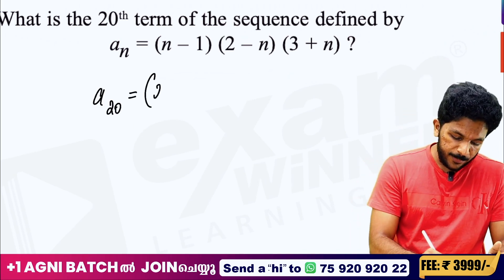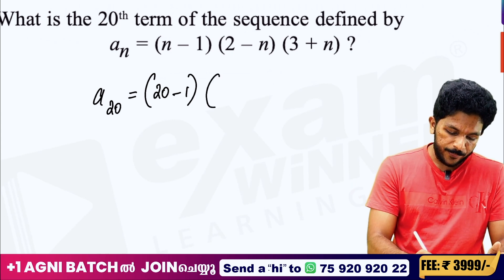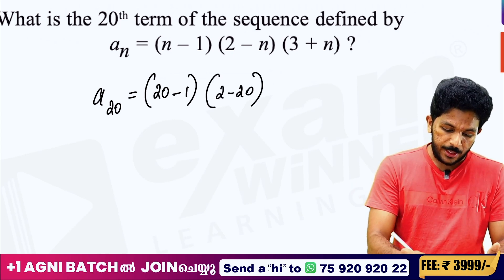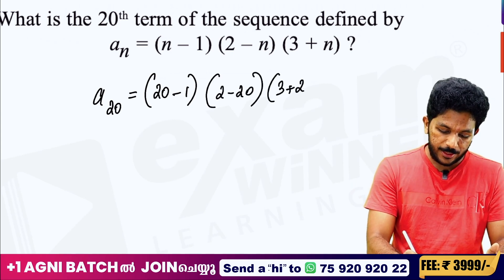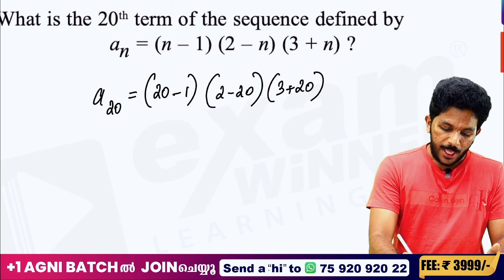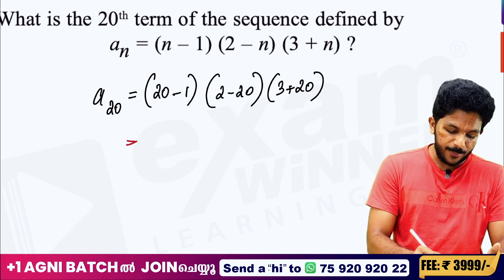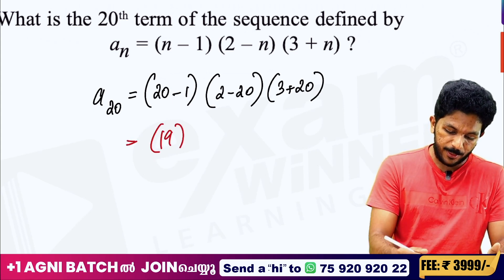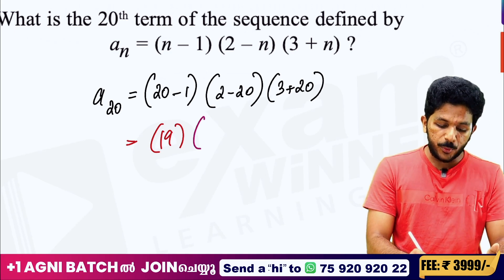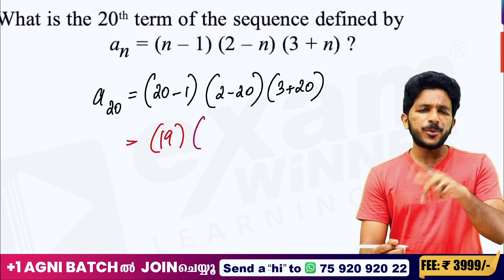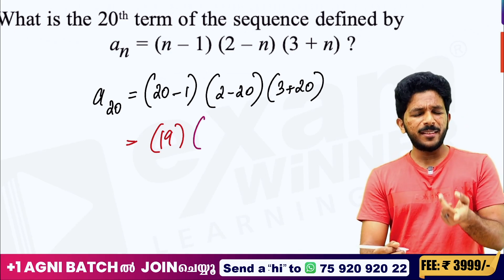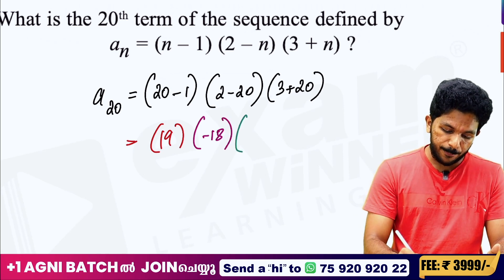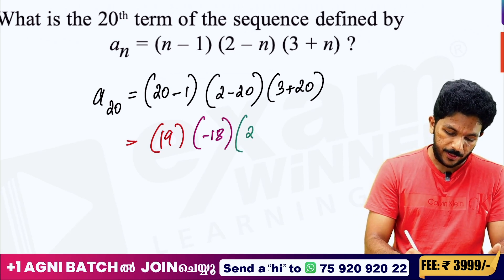I will show you: 20 minus 1, then 2 minus n becomes 2 minus 20, and 3 plus n becomes 3 plus 20, so 20 minus 1 gives first number 19. The second bracket is 2 minus 20 equals 2 minus 18, which is minus 18.